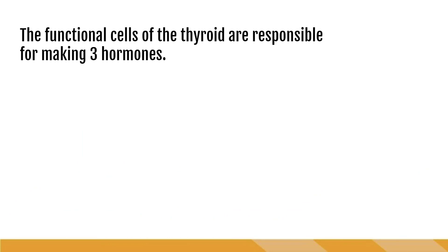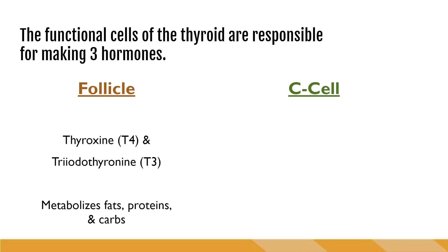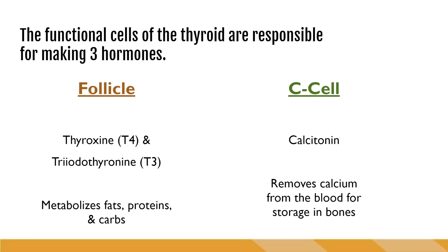The functional cells of the thyroid are responsible for making three hormones. The follicles make thyroxine, abbreviated as T4, and triiodothyronine, abbreviated as T3. These are responsible for metabolizing fats, proteins, and carbs. The C cells make calcitonin, which helps remove calcium from the blood for storage in the bones.